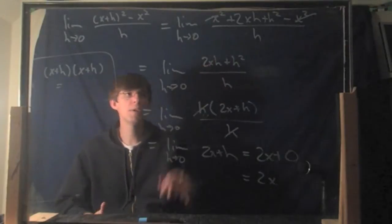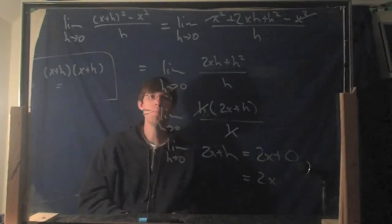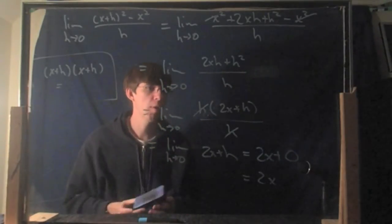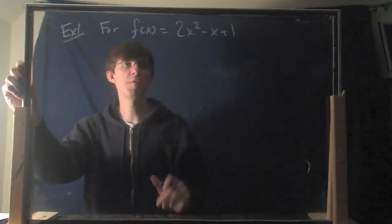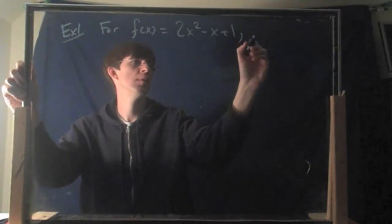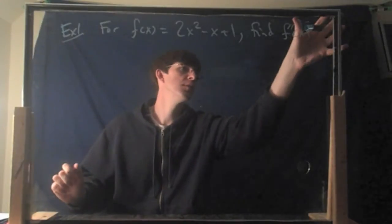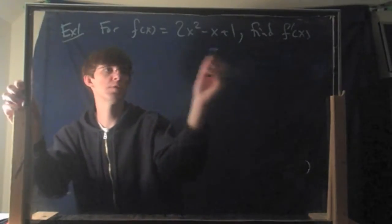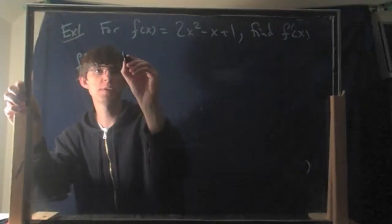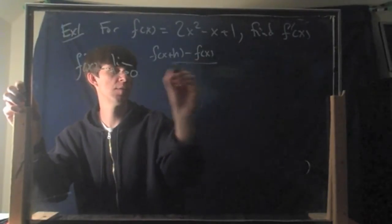Let's try one more — these are a little long-winded and there's a lot of opportunity to mess up, but this is how you do it. Here's a harder one: for f(x) = 2x² − x + 1, find f prime of x. It's similar but harder. Let's do it the same way. You begin with the definition: f prime of x equals the limit as h goes to 0 of f(x+h) minus f(x) divided by h.